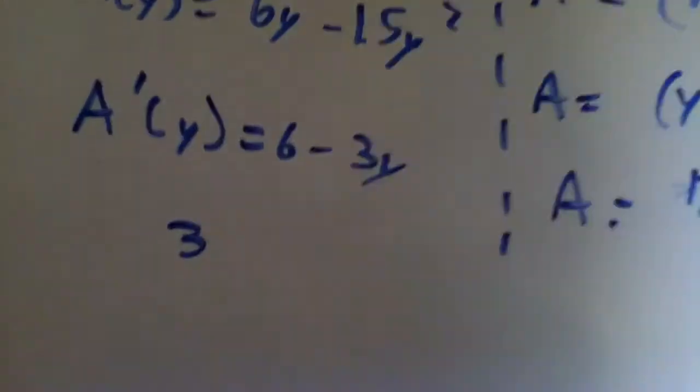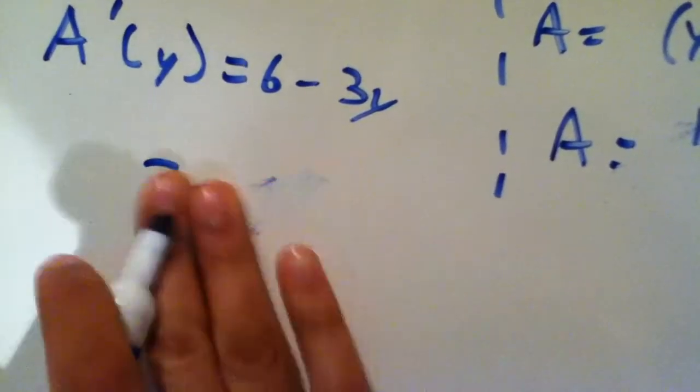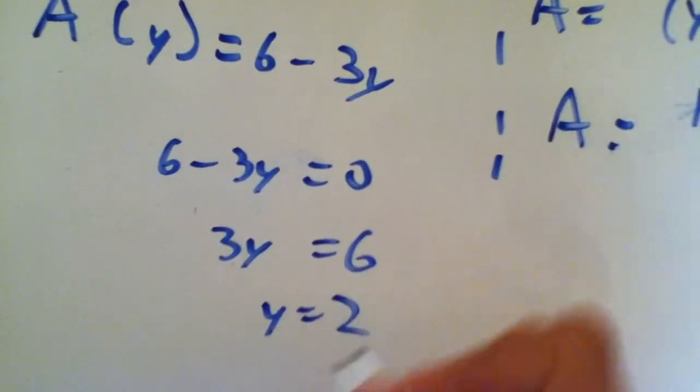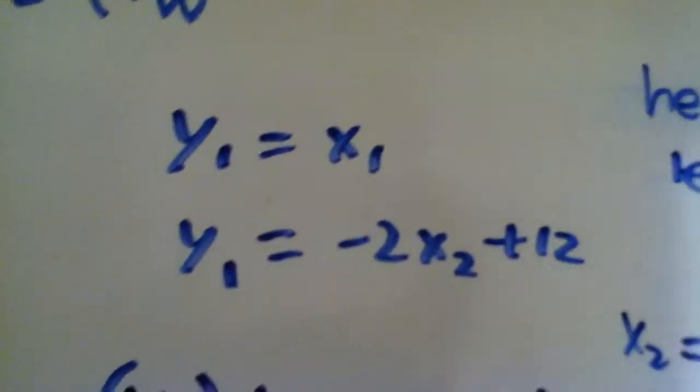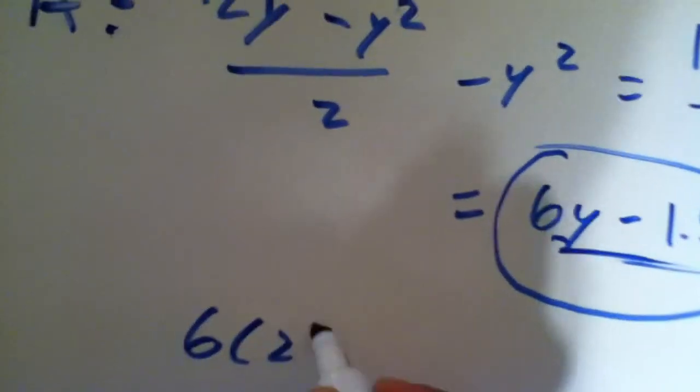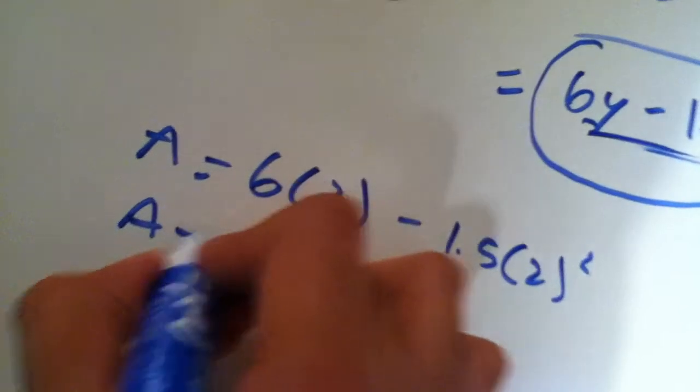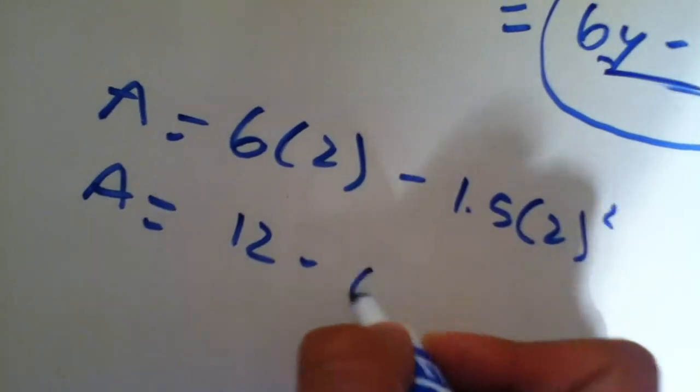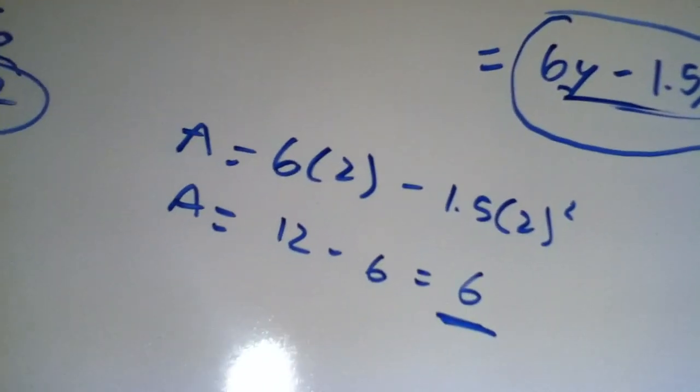So 3y equals 6, y equals 2. And we plug this 2 back in to our original equation for area, which is right here. 6 times 2 minus 1.5 times 2 squared. And this will give us the maximum area. 12 minus 6, and that equals 6. So our maximum area is 6. Thank you.